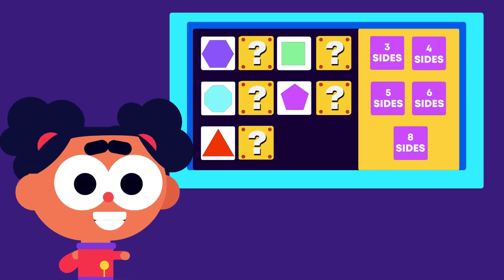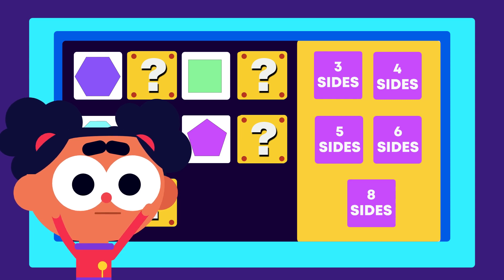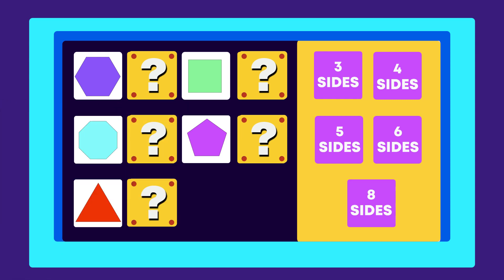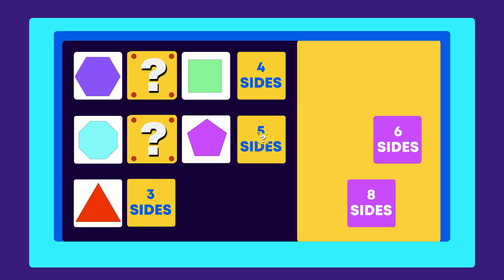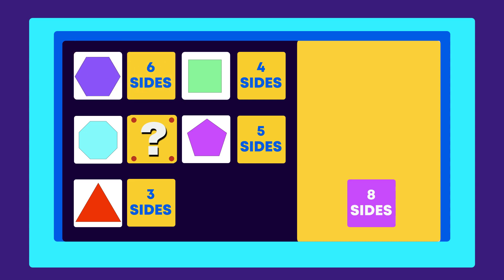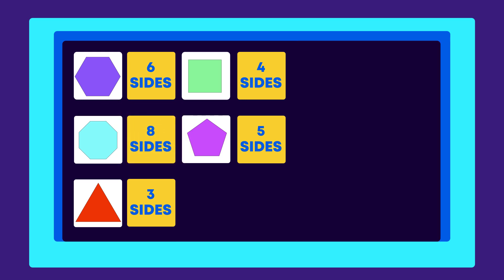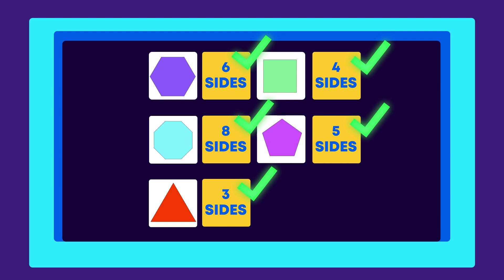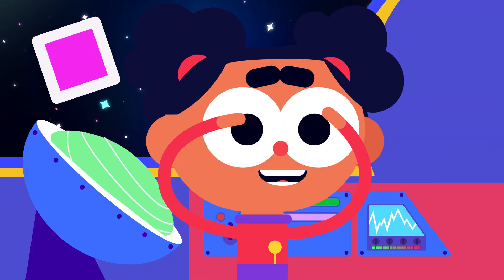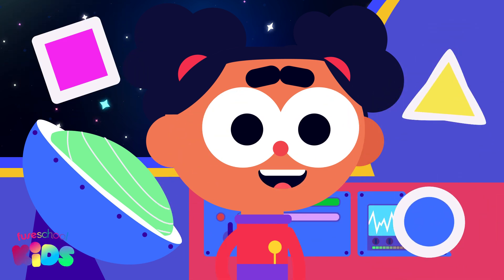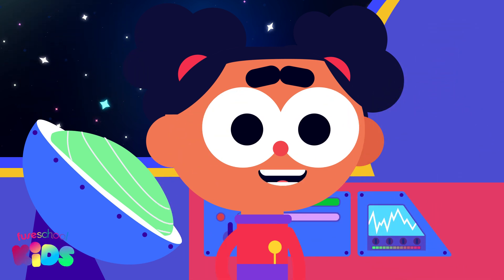The time has come to play a memory game. Are you ready? Triangles are 3-sided shapes. Quadrilaterals are 4-sided shapes. Pentagons are 5-sided shapes. Hexagons are 6-sided shapes. Octagons are 8-sided shapes. Now it's your turn to use your new shape words to identify different 2D shapes around you.